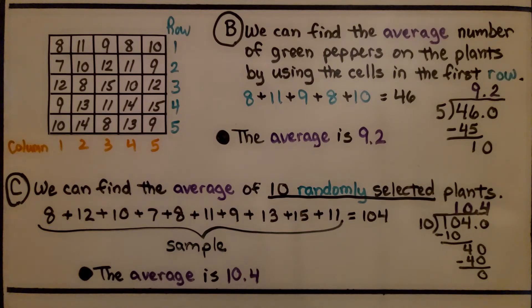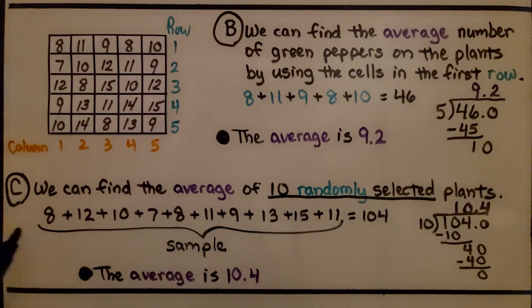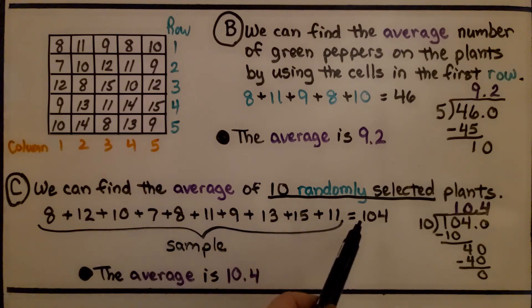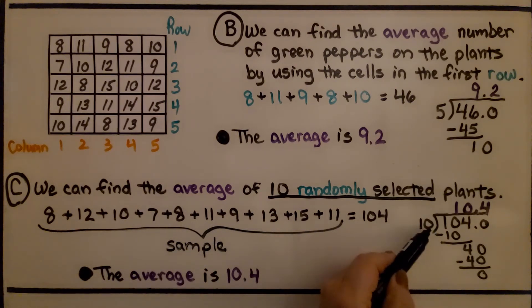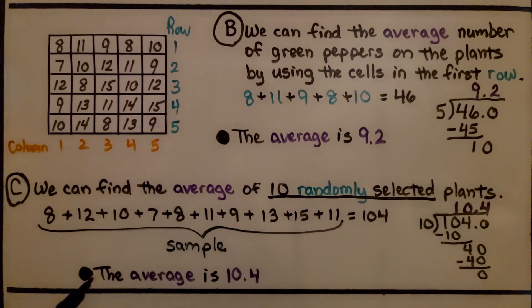For Part C, we find the average of 10 randomly selected plants. We pick one number for the row and another for the column, and I ended up with these 10 numbers as my sample of the population. I added them up and got 104. There are 10 addends, so I divided 104 by 10 and got 10 and 4 tenths. The average is 10.4 for 10 randomly selected plants.